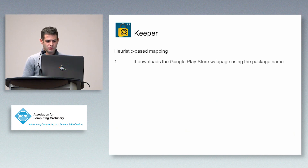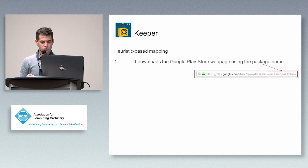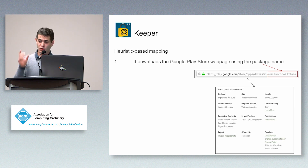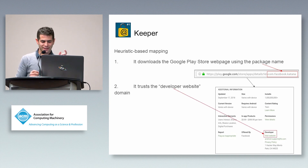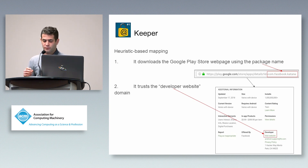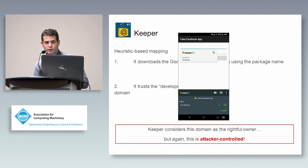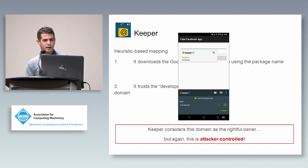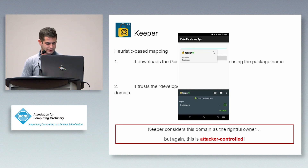The other one is Keeper. Since the package name uniquely identifies an Android app on the Google Play Store, it builds a URL from the package name, downloads the web page of the Android application from the Google Play Store, and trusts the domain found in the developer website field. But again, it's attacker-controlled. When we uploaded the com.facebook.fake application, we also set facebook.com as the developer website field.